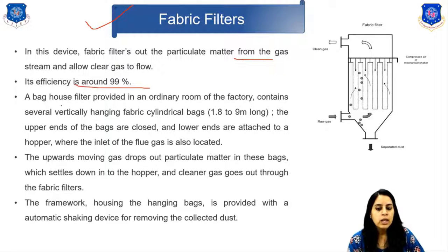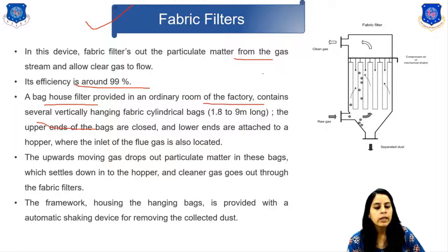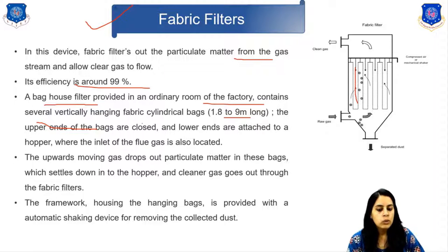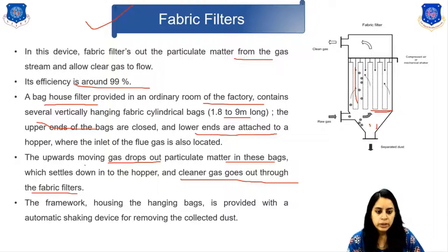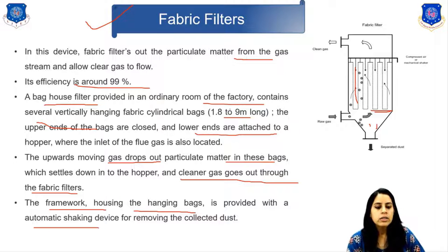The efficiency is 99%. A baghouse filter is provided in an ordinary room of the factory, containing several vertically hanging fabric bags, 1.8 to 9 meters long. The upper end of the bags is closed and the lower end is attached to the hopper where the inlet of the foul gas is collected. The upward-moving gas drops out the particulate matter into the bags, which settle down into the hopper, and the clean gas passes through the fabric filter. The framework housing has an automatic shaking device for removing the collected dust.